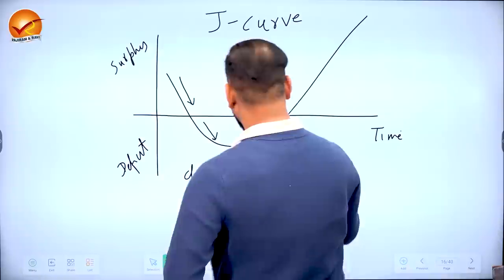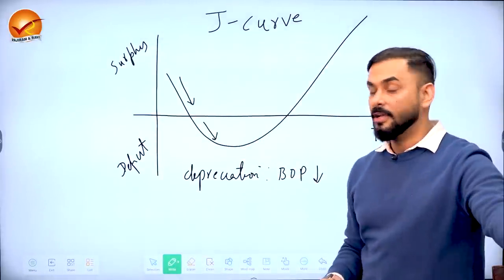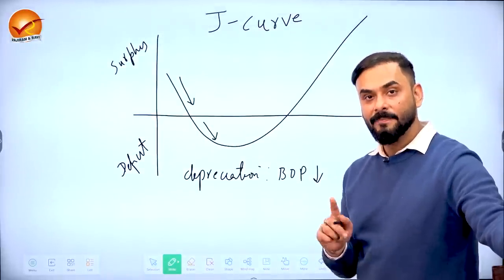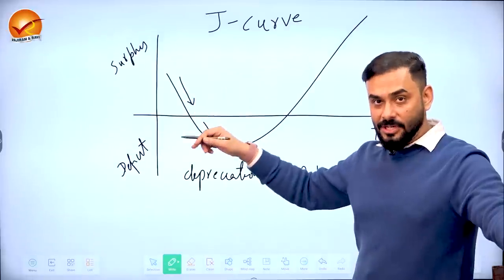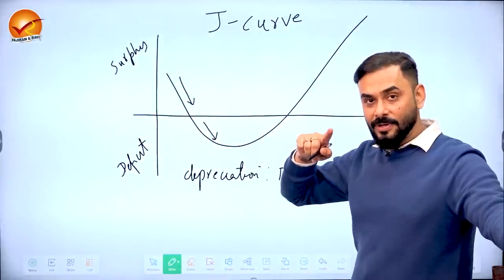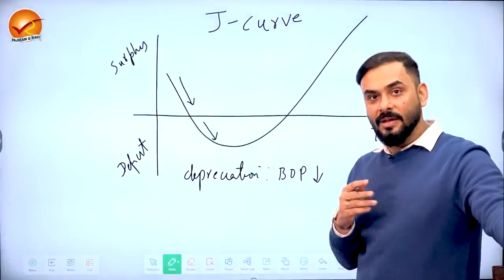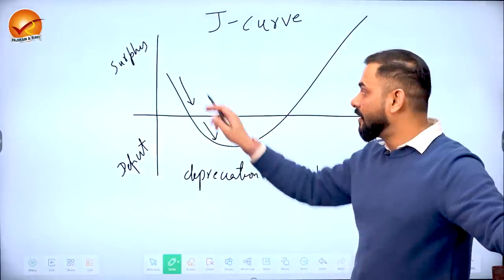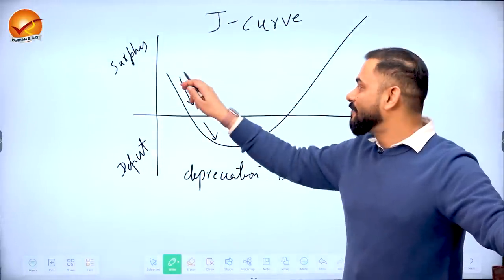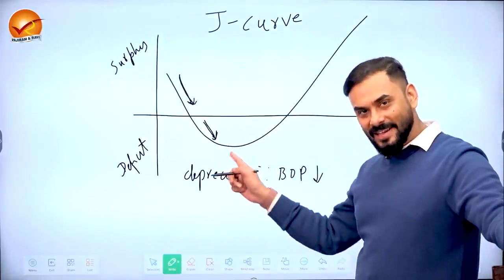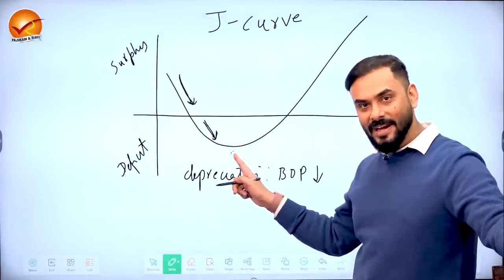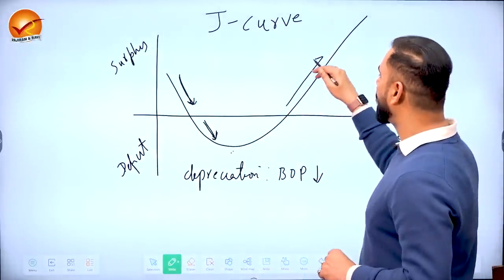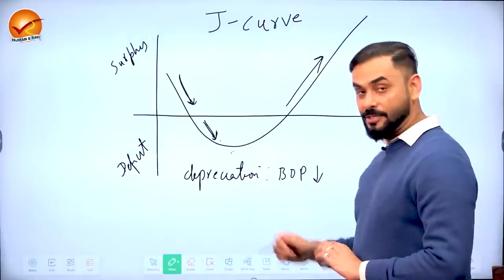This situation is explained by the J-curve effect. The J-curve says that when depreciation happens, export becomes cheaper and import becomes costly. But if a country's imports are inelastic — like India's imports of oil, metal, etc., which are unavoidable — then the balance of payment condition deteriorates rather than improves. In the short run, our condition worsened; only in the long run might we benefit from depreciation.